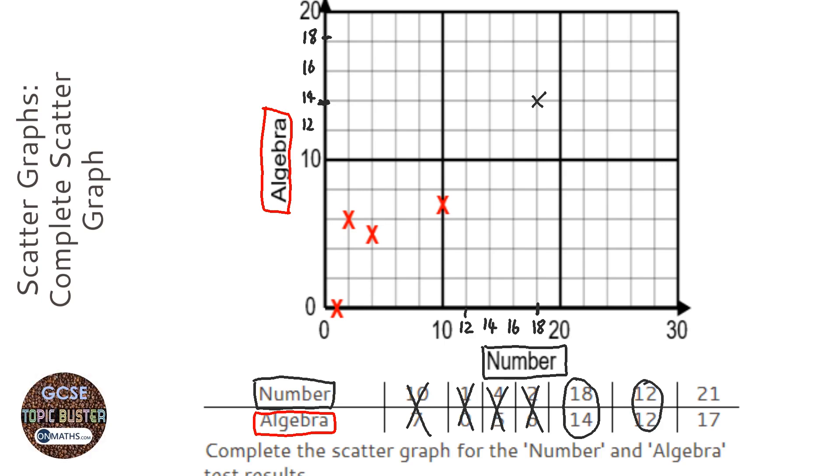Next we're going to do 12, 12. That would be 12 on the Number which is here, 12 on the Algebra which is here, so it's going to be a cross there. And last one, 21, 17.